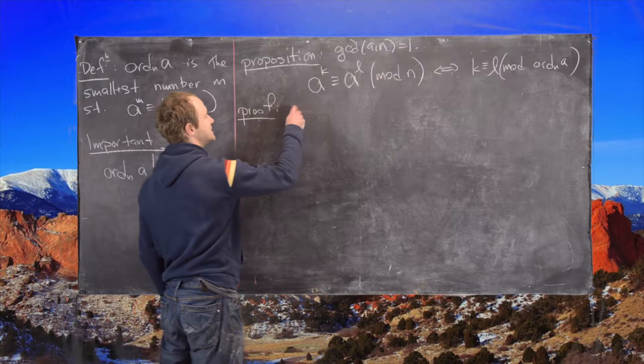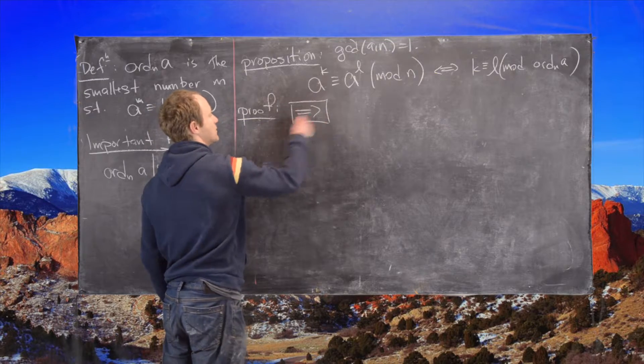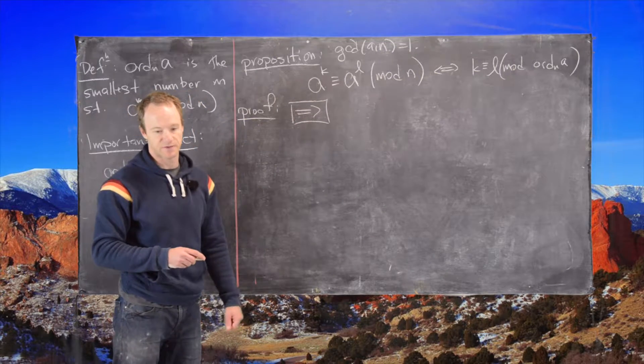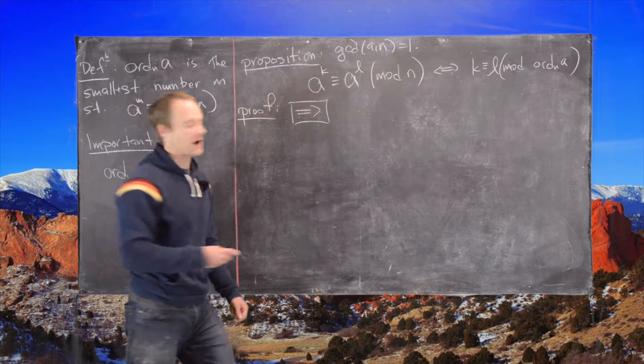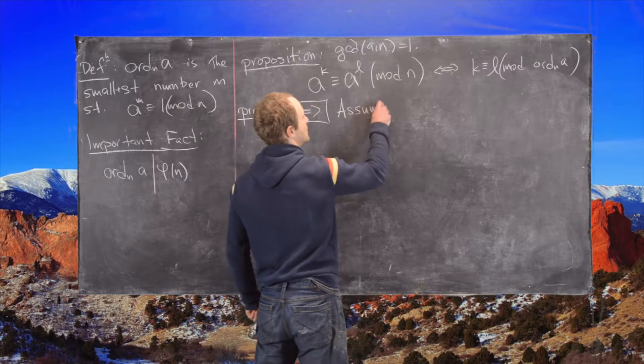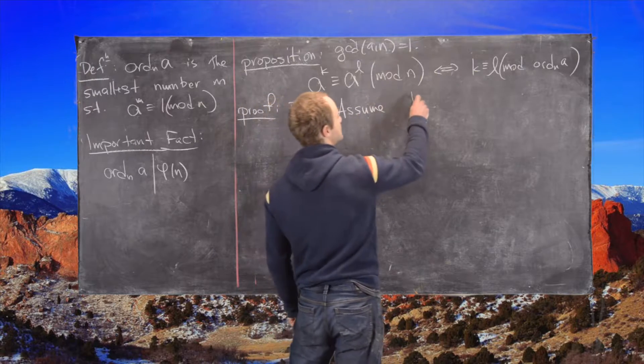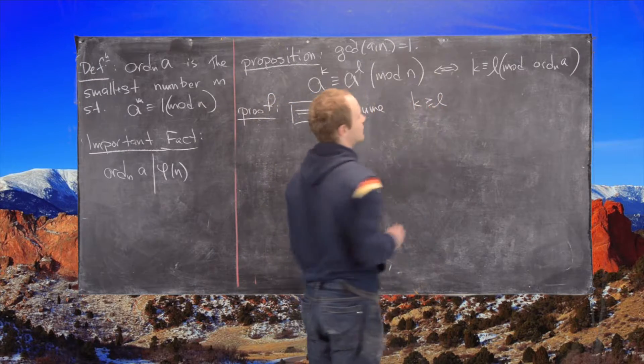Okay, so let's look at our proof. This is an if and only if statement so we have to go in both directions. So let's go in this direction first and what I want to notice here is the following. Let's assume that k is bigger than or equal to l.